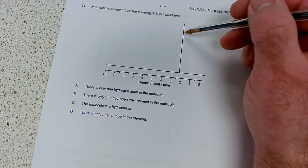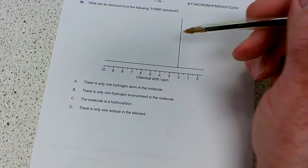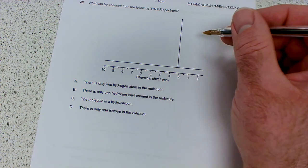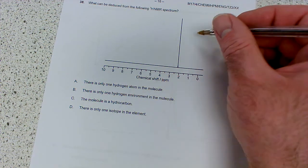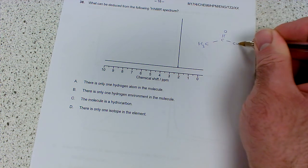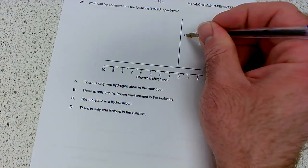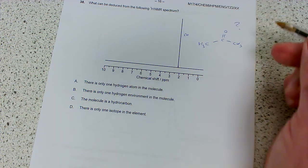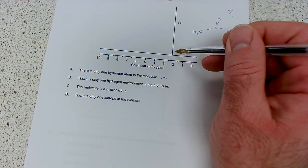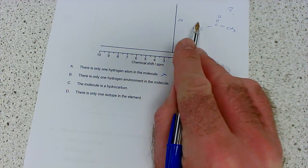What can we deduce from this proton NMR spectrum? We've got one peak at around 2. Option A says there's only one hydrogen atom - we don't know that, there's no integration to compare. This could be three methyl groups, nine hydrogens total. For example, propanone would give one peak because those hydrogens are in the same environment as these, and could be six protons tall.